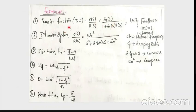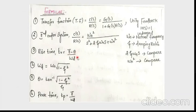The transfer function is C(s)/R(s) = G(s) / (1 + G(s)·H(s)). The second-order system is given by C(s)/R(s) = ωn² / (s² + 2ψωn·s + ωn²). The damped frequency is ωd = ωn·√(1 − ψ²), and the phase angle θ = tan⁻¹(√(1 − ψ²) / ψ).